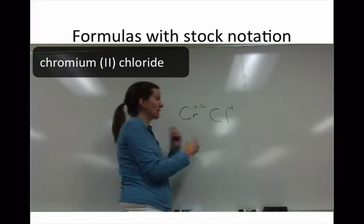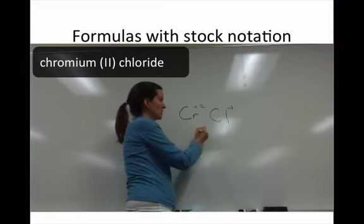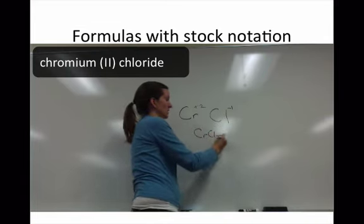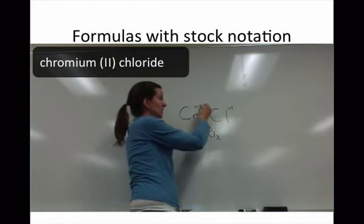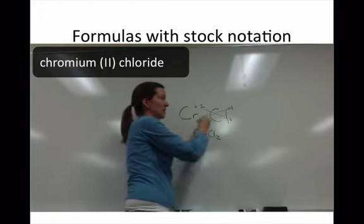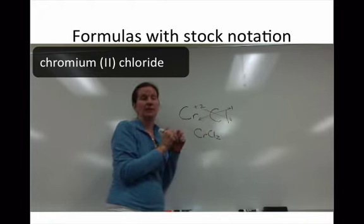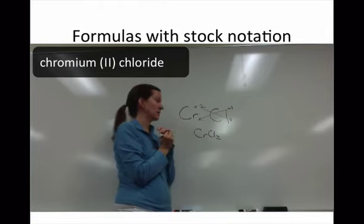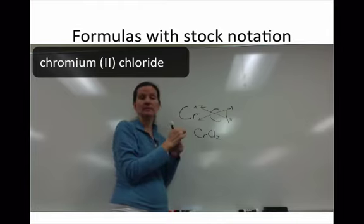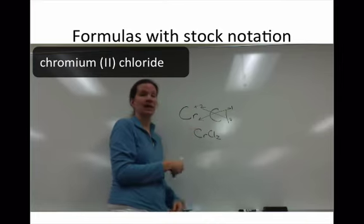So to have these come together, to become neutral, you need 2 chlorines and 1 chromium. You can do the crisscross method where the charges come down or if you understand the least common multiple, the least common multiple of these is 2. You need 1 chromium and 2 chlorines to get to that 2.